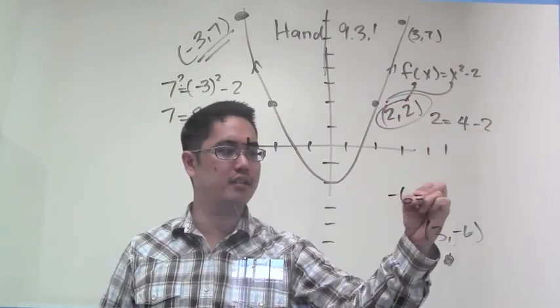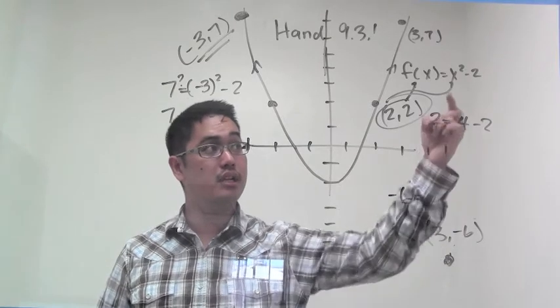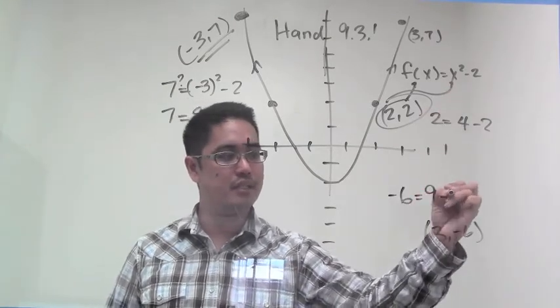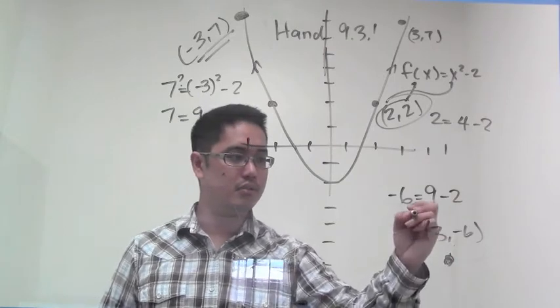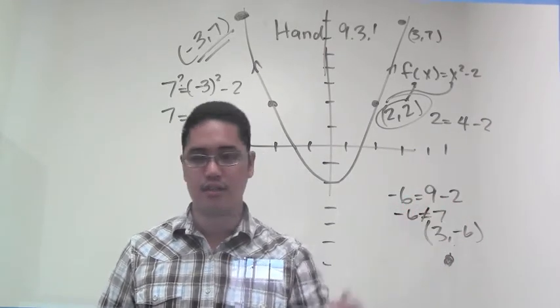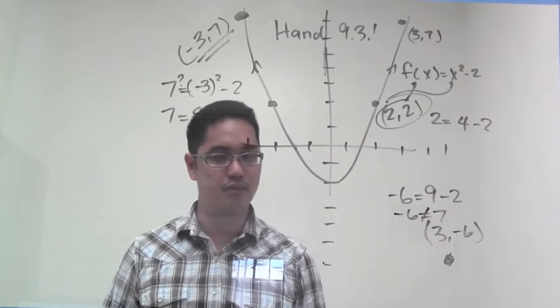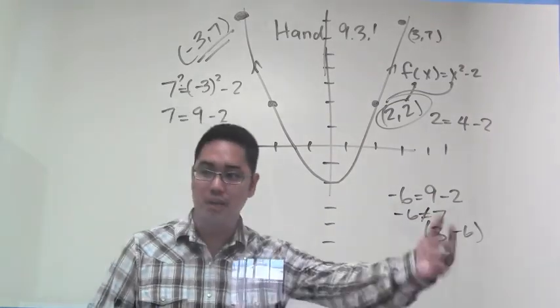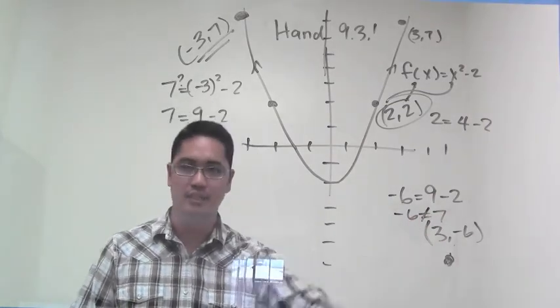I'll have negative 6 equals 3 squared, which is 9, minus 2. 9 minus 2 is 7. Is negative 6 equal to 7? No. This point doesn't work, as you can tell by looking at this graph and saying, oh, obviously it's not even close.